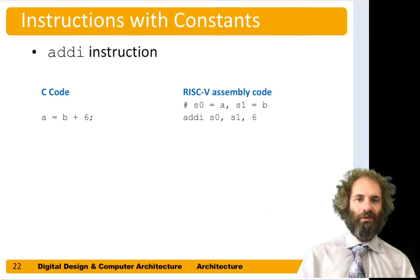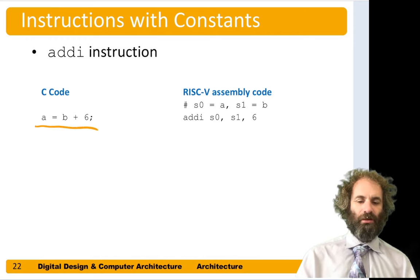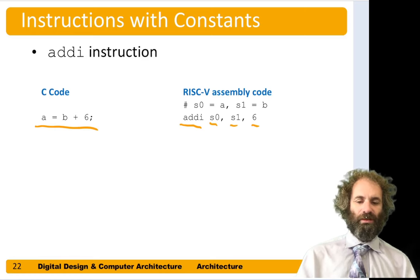In another example, let's introduce a constant: A equals B plus 6. We introduce a new instruction, ADDI, which stands for add immediate. It takes a destination, a source, and a constant or immediate. Here, A is in S0 and B is in S1, so we'll write: addi S0, S1, 6.